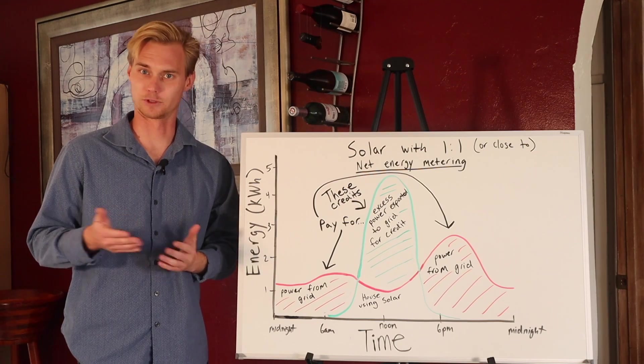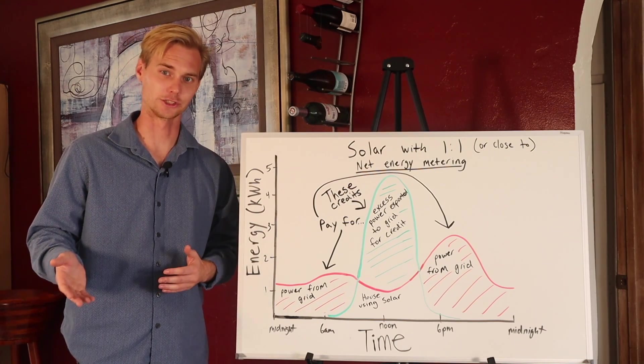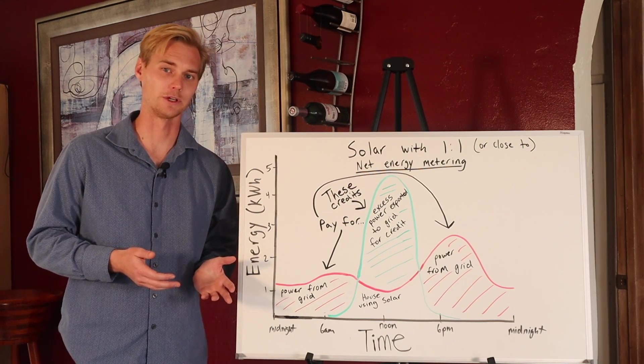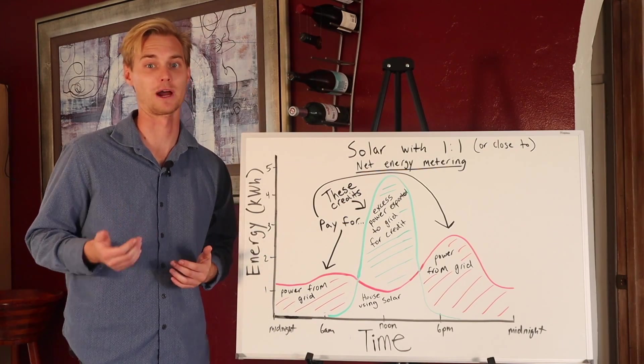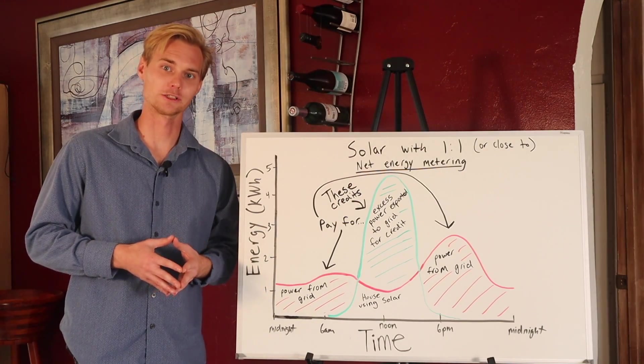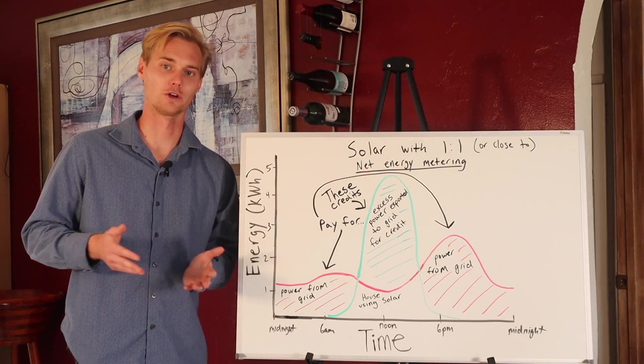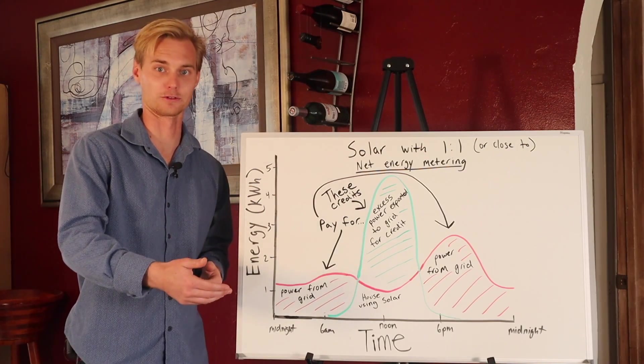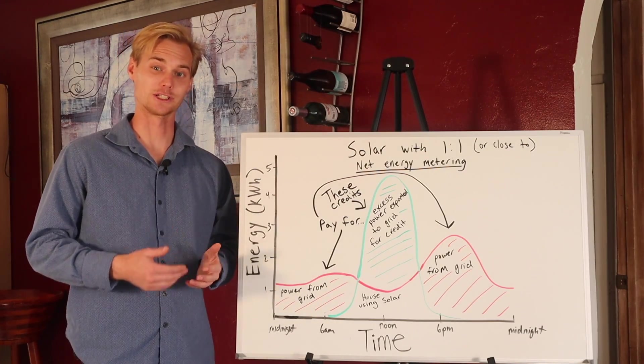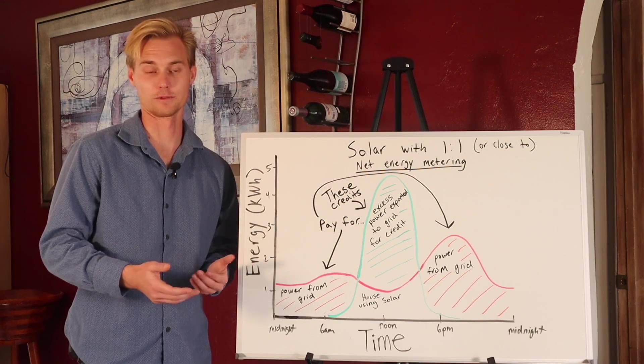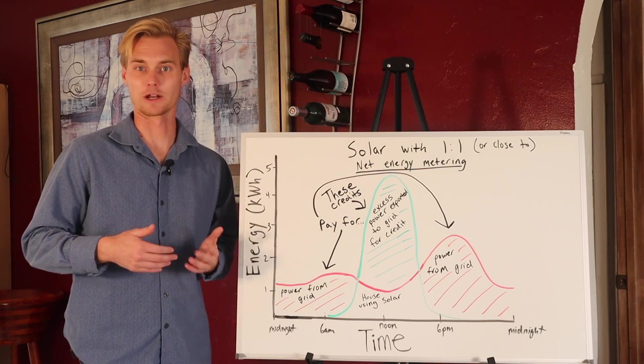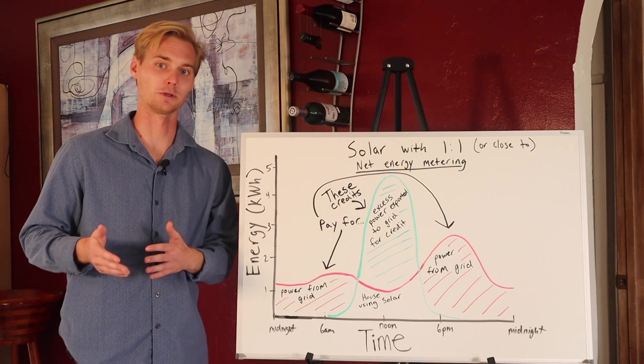Currently, right now, if you don't have any solar on your house, your relationship with the utility company is simple. You're a customer. You only ever buy power, but when you go solar, there's actually times when you're producing more than your home is consuming, and so that power is actually going back out to the grid, and so sometimes you're actually selling power to the grid, and your relationship kind of changes from a customer to an energy producing partner.